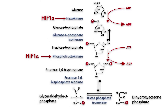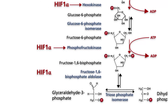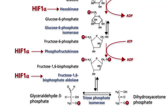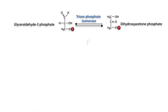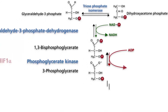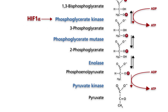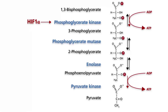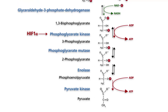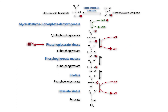Fructose 1,6-bisphosphate aldolase is the next glycolytic enzyme stimulated by HIF-1-alpha. Finally, HIF-1-alpha stimulates the synthesis of phosphoglycerate kinase. In the reaction catalyzed by phosphoglycerate kinase, ATP is generated from ADP with no oxygen consumption. It is evident that HIF-1-alpha regulates the synthesis of essential glycolytic enzymes.